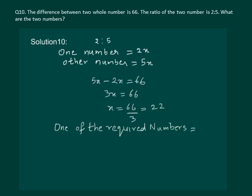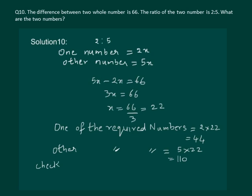Dividing by 3 on both sides gives us x is equal to 22. So one of the required numbers is equal to 2x, which is equal to 44. The other required number is equal to 5x, which is equal to 110. We can check: 110 minus 44 is equal to 66. Hence 44 and 110 are the desired numbers.